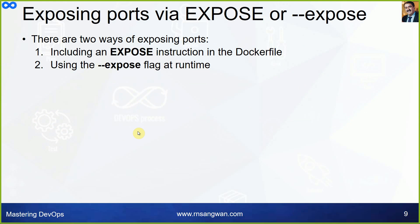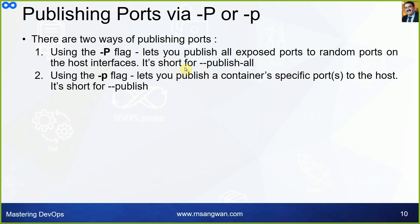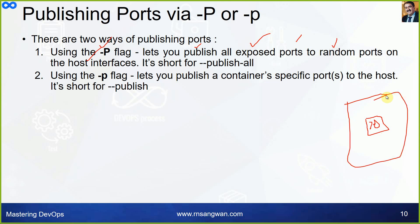There are two ways of exposing ports. First, you can use the `EXPOSE` instruction in your Dockerfile. Second, you can use the expose flag at runtime when publishing the port. Using the uppercase `-P` flag in `podman run` will publish all exposed ports to random ports on the host interface — meaning a specific port inside the container, say port 70, gets mapped to a random host port.